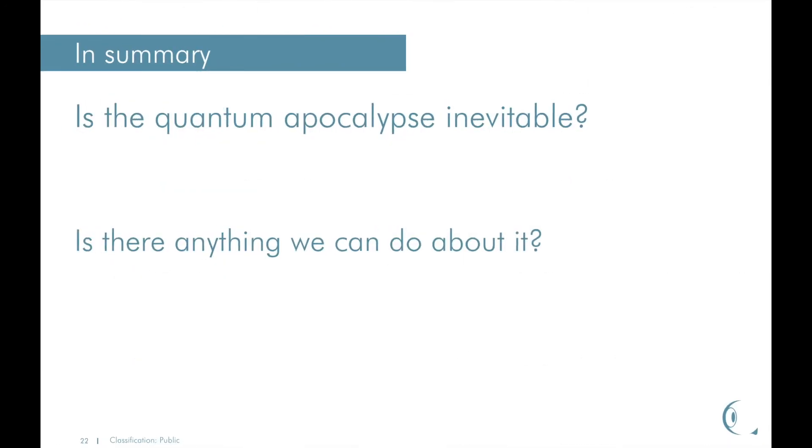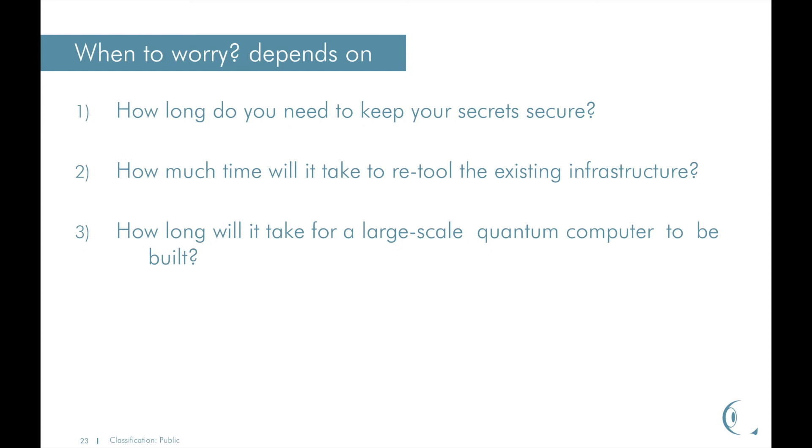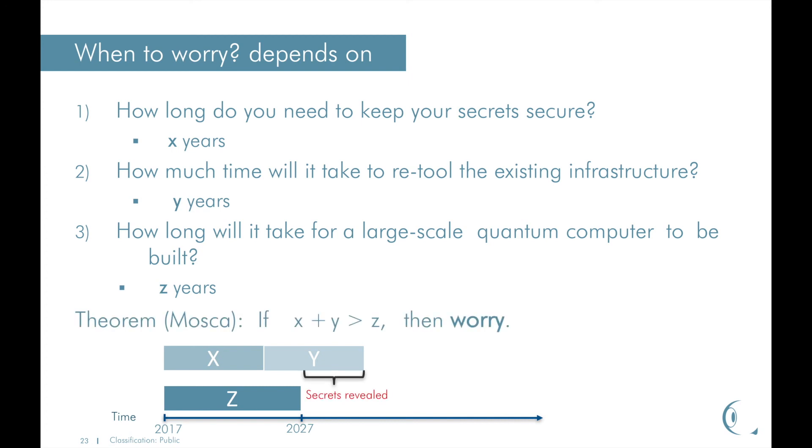In summary, is the quantum apocalypse inevitable? Yes, it is. Is there anything we can do about it? Well, yes. When do we need to worry? Well, it depends on several factors. For example, how long do you need to keep your secrets secure? Let's say you need to keep them for X years. How much time will it take to retool the existing infrastructure? Let's say it will take Y years. How long will it take for a large-scale quantum computer to be built? Let's say it takes Z years. Now give it some time frame. And then look at the theorem, which states that if X plus Y is greater than Z, then you need to worry right now.